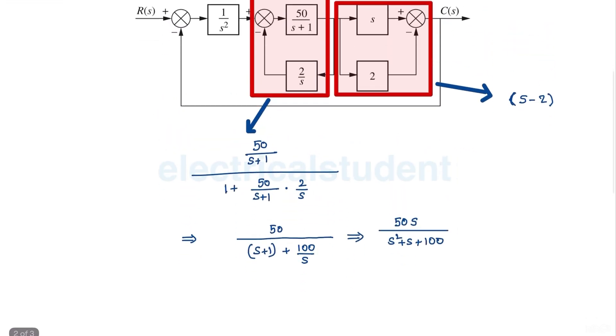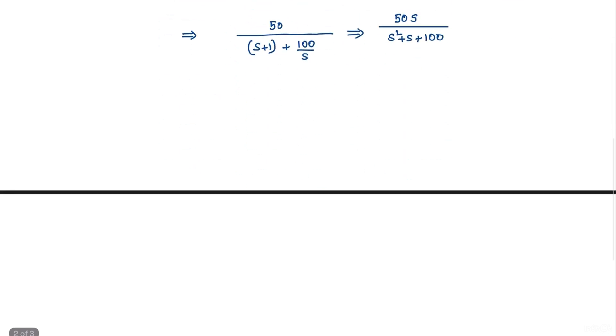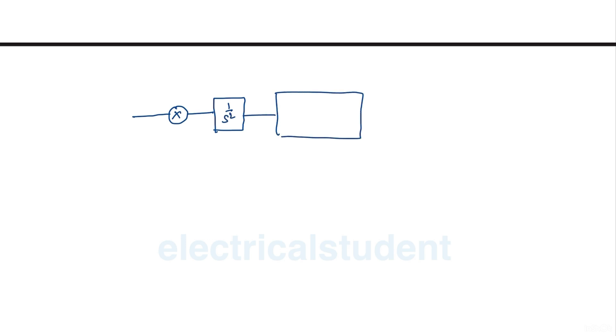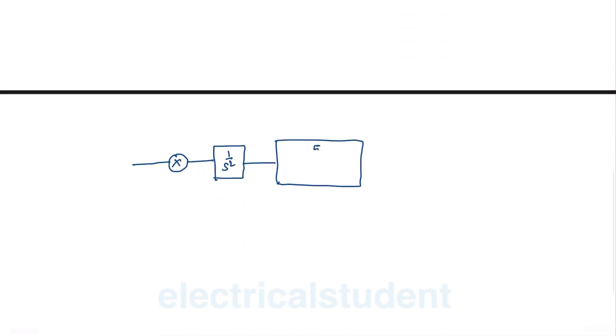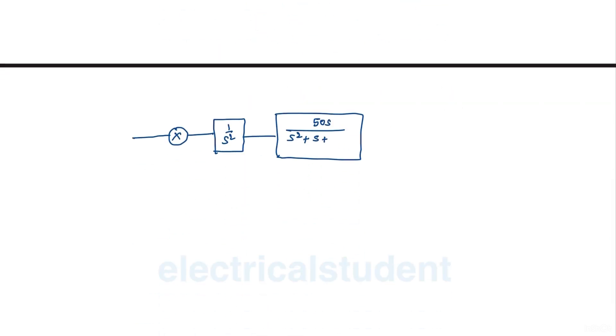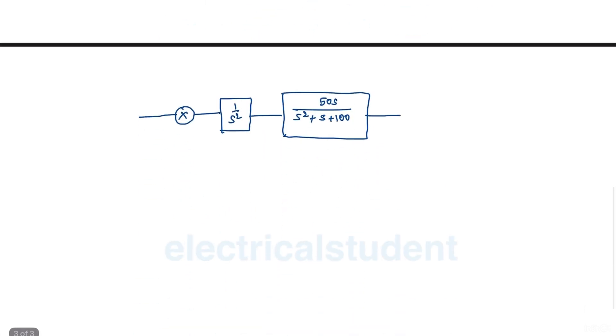We can now redraw the given block diagram with the original summing point, the first block 1 over s², the reduced block 50s over (s² + s + 100), and the next block (s minus 2).